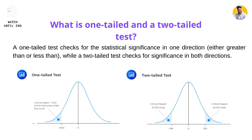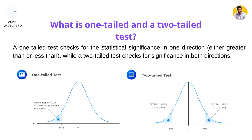In the two-tail test, if your value falls under the critical region area, only then can you reject the null hypothesis; otherwise you are not able to reject the null hypothesis.